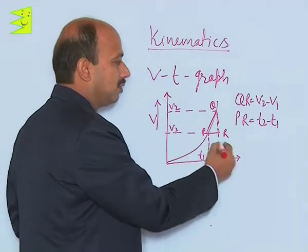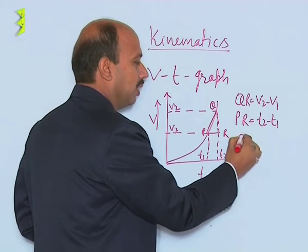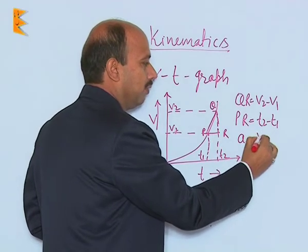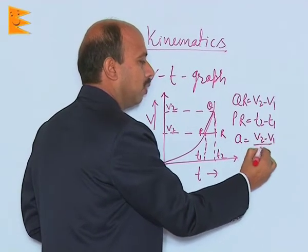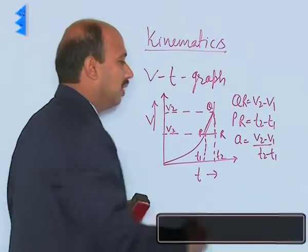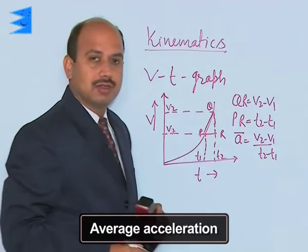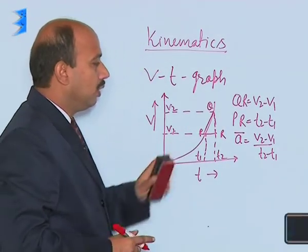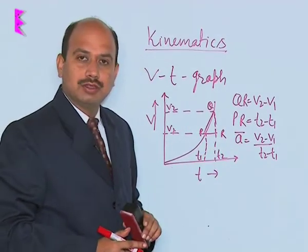Now see, slope of this graph or this line, you can say A is equal to V2 minus V1 upon t2 minus t1. So this acceleration is the average acceleration. Here we calculate average acceleration.